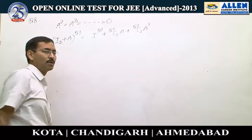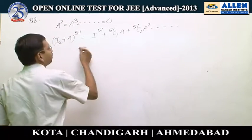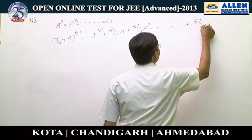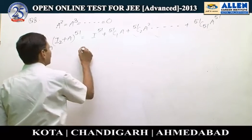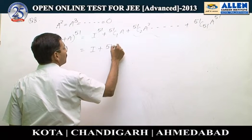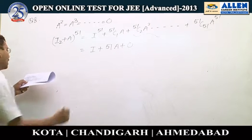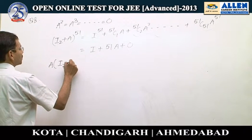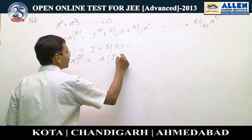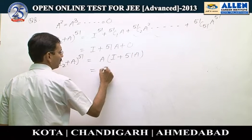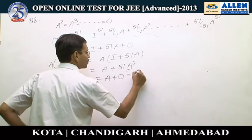I am not writing I^50, I^49 because those are just I. Up to the last term 51C51·A^51, all these matrices from A² onward are null matrices. So it simplifies to I + 51A. They are asking A·(I₂ + A)^51 = A·(I + 51A) = A + 51A². Since A² is the null matrix, it is A + null matrix = A.